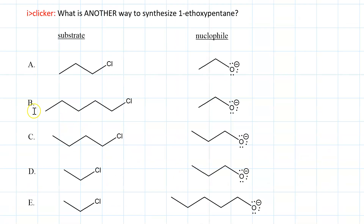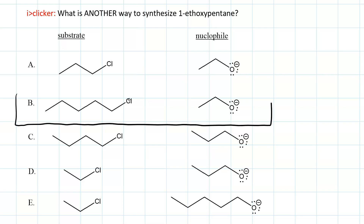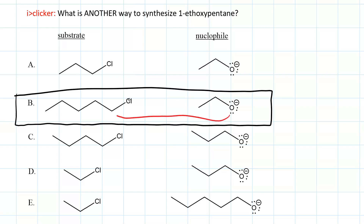We could also do this using an alkyl chloride or an alkyl iodide — we chose bromide. What we did is essentially very similar: nucleophilic attack and loss of a leaving group, and we have our product.